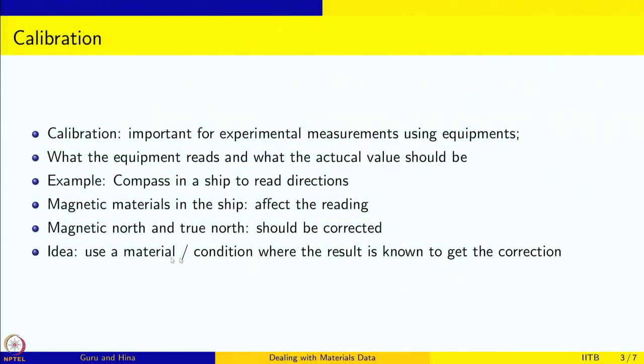The idea is to use a material or condition where the result is known, and use the equipment to make the measurement. Because we already know what the result should be, we will know what error the equipment is giving, and we keep a record of this error so we can correct it when we make a measurement on an unknown material or in a new situation. That is the basic idea behind calibration.